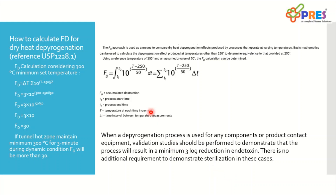Here is the formula for calculating the FD value: from time T1 (starting process time) to T2 (end process time), the integral of 10 to the power of (T minus 250) divided by 50, multiplied by delta-T (the time interval between temperature measurements). For example, if the set temperature is 300°C and exposure time is 3 minutes, the AFD will be 30. This AFD will vary based on changes in the 300°C and 3-minute set points. This calculation is shown to clarify how to calculate AFD — not to specify that you must run your system at 300°C for 3 minutes. That is a myth; you need to validate with actual endotoxin recovery.